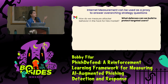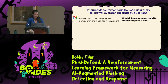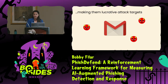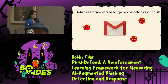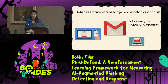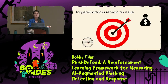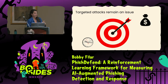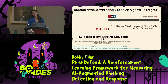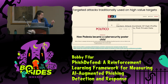Let's dive into the first project: how do we measure attacker behavior in the hack-for-hire market, with the overarching goal to figure out what defenses we can build to better protect users? Email accounts are super rich in information, which makes them super lucrative attack targets. Defenses have made large-scale attacks difficult — defenses like two-factor authentication, spam filtering, and security questions. But targeted attacks still remain an issue, because the economics of targeted attacks is very different. Instead of sending 100,000 emails hoping 10 people click, you're spending a lot more time cultivating a targeted, personalized message with hopes of a higher payout. We usually think of high-profile targets like politicians and celebrities.